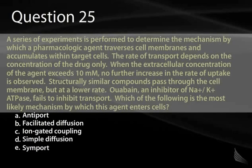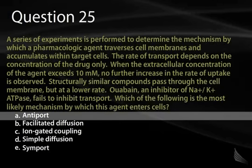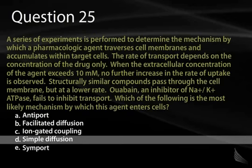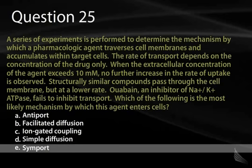Question 25. A series of experiments determines how a pharmacologic agent traverses cell membranes and accumulates within target cells. The rate of transport depends on concentration only. When extracellular concentration exceeds 10 millimolar, no further increase in uptake is observed. Structurally similar compounds pass through at a lower rate. Wobane, an inhibitor of the sodium-potassium ATPase, fails to inhibit transport. Which of the following is the most likely mechanism? A, antiport. B, facilitated diffusion. C, ion-gated coupling. D, simple diffusion. Or E, symport.